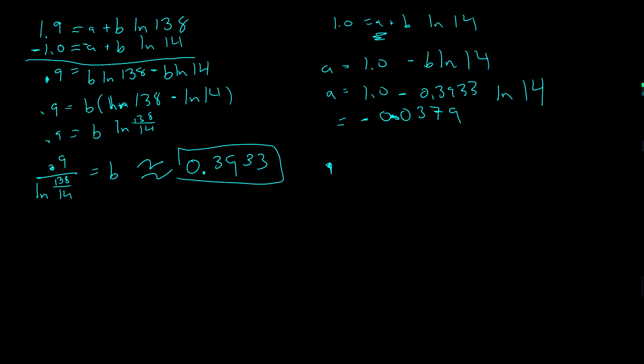Putting this all together, my function, my walking speed s is equal to negative 0.0379 plus 0.3933 times the natural log of the population. And we have made a model from our data. In the next video, I'm going to do an exponential model, and then we'll look at software that can do some of this modeling for us.